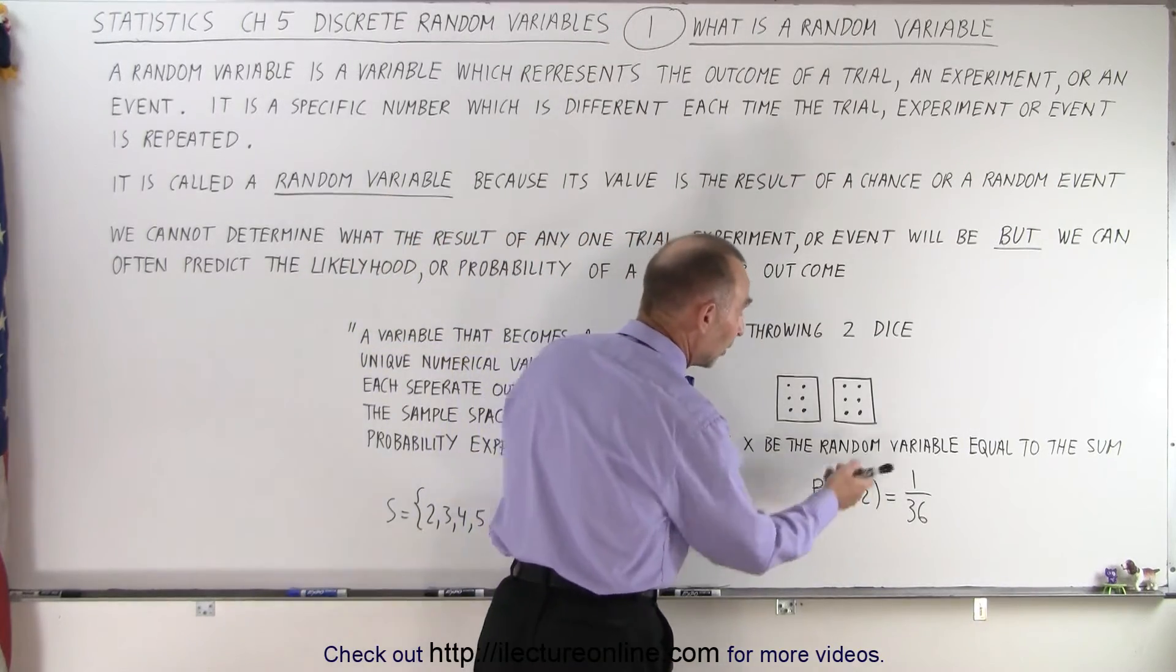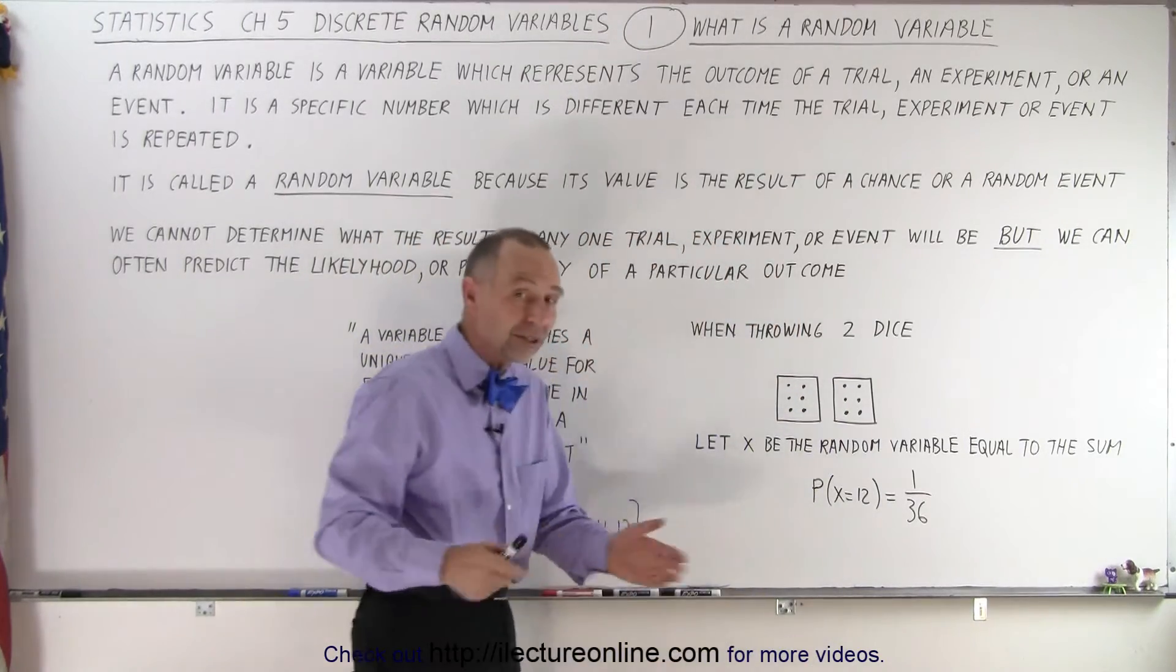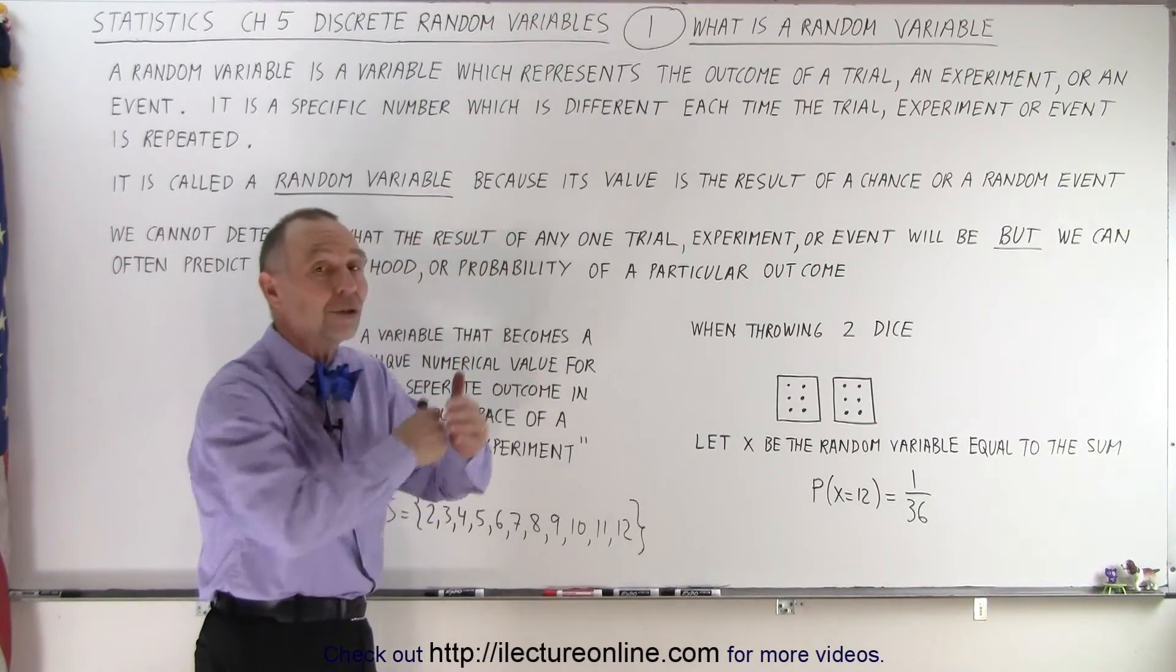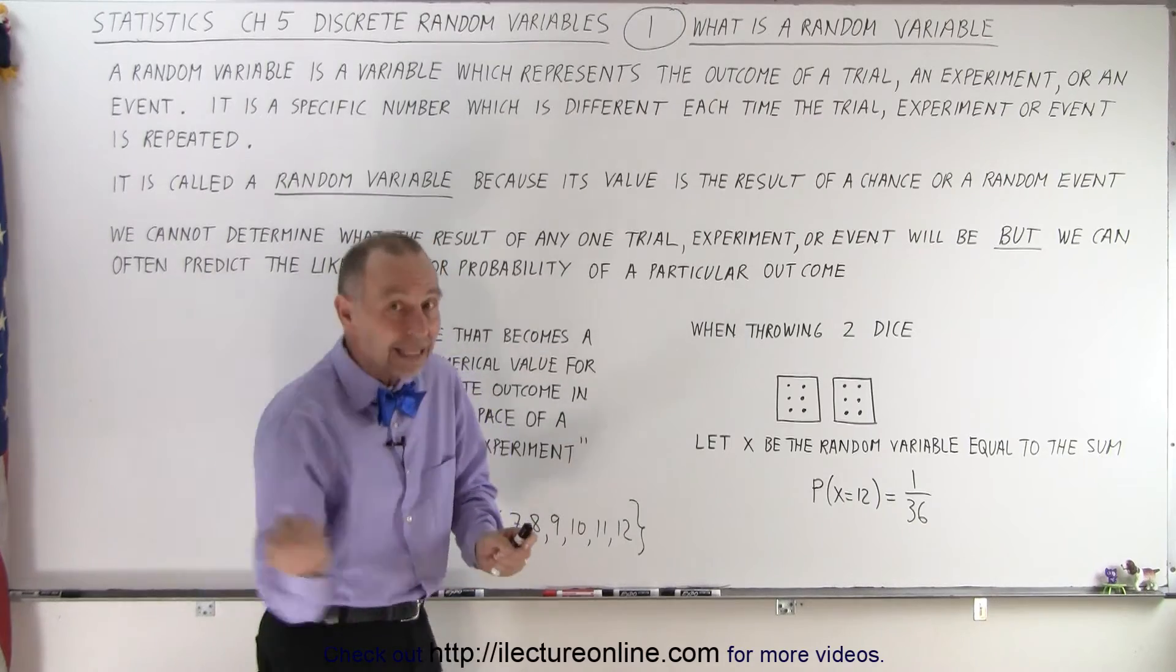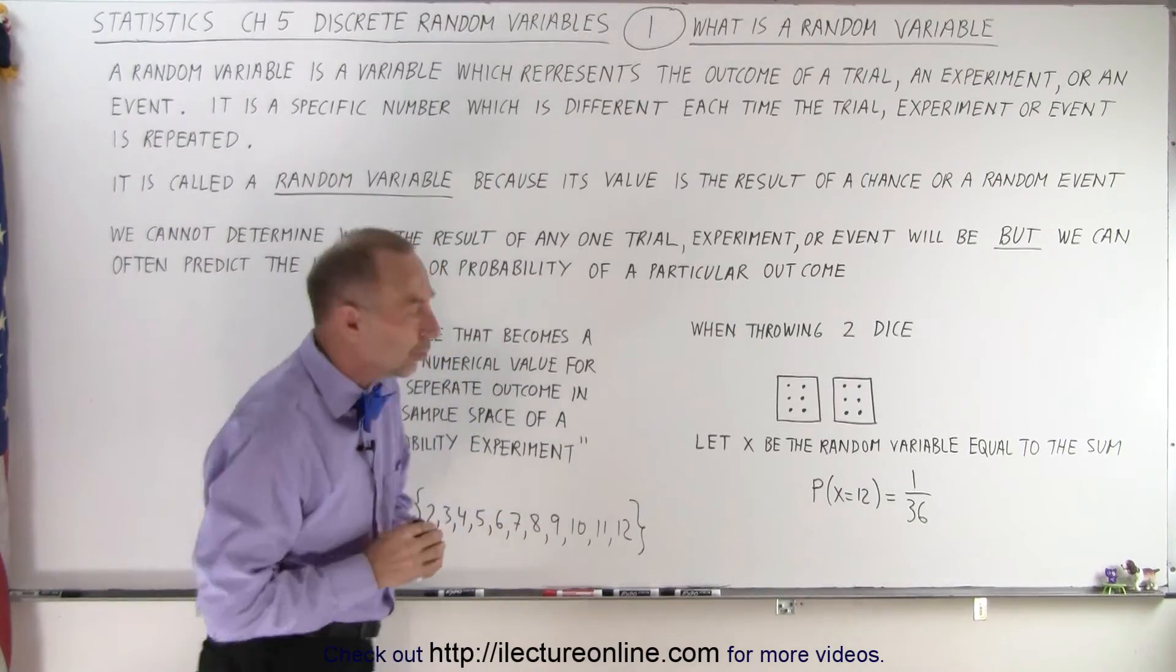the probability that x will be 12, that we end up with two sixes, double sixes we call it, that's one out of 36. So the probability is one out of 36 it will be that, but at any given time you can end up with two sixes.